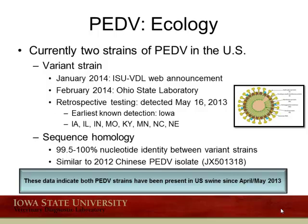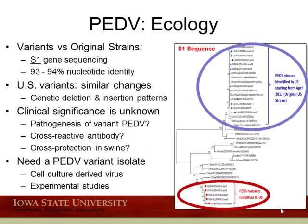Collectively, these data indicate that both PED strains have been present in U.S. swine since approximately April or May of last year. Comparing the variant to the original strain based on the spike gene sequence — the most commonly used variable region of the genome — demonstrates 93 to 94 percent nucleotide identity. Phylogenetic analysis shows the sequences cluster separately, with original sequences in one cluster and variants forming their own separate cluster. The U.S. variants have similar genetic changes with deletions and insertions in their genome; however, the clinical significance still remains unknown. A PED variant isolate is needed to do experimental studies to understand pathogenesis and potential cross-protection against the original strain.